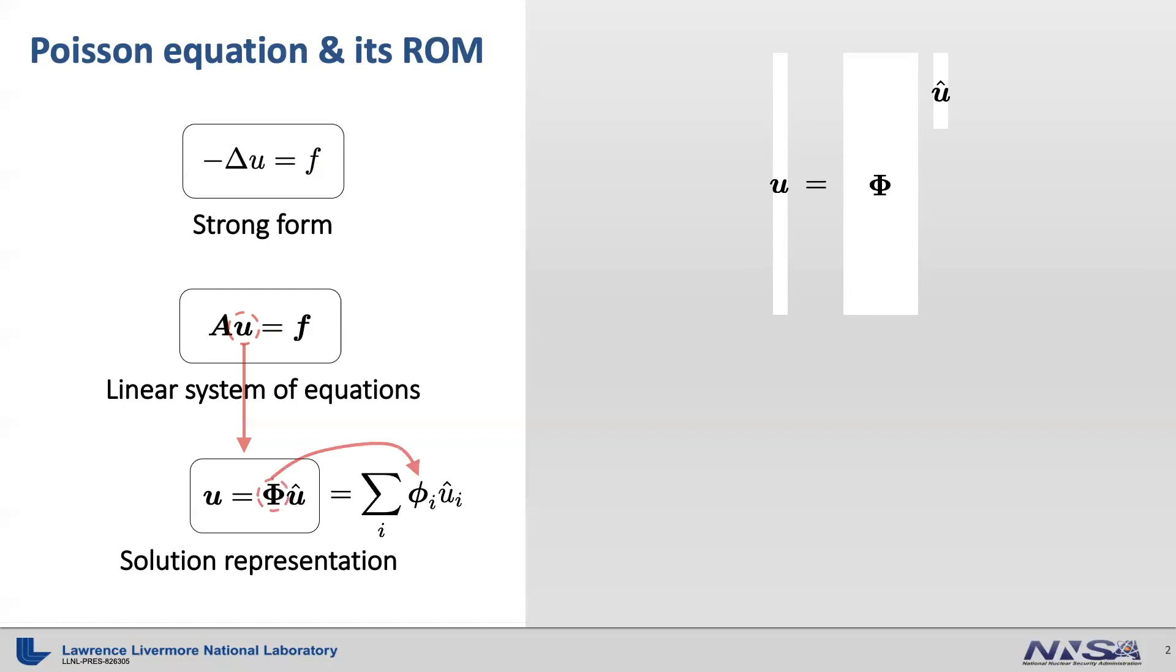Here again, phi_i is the ith column vector of the reduced-basis matrix phi. Plugging this solution representation into the linear system of equations, we get A times phi times U hat equals f. Note that this is an overdetermined system, where there are more equations than unknowns. In order to solve for U hat, we need to close the system.